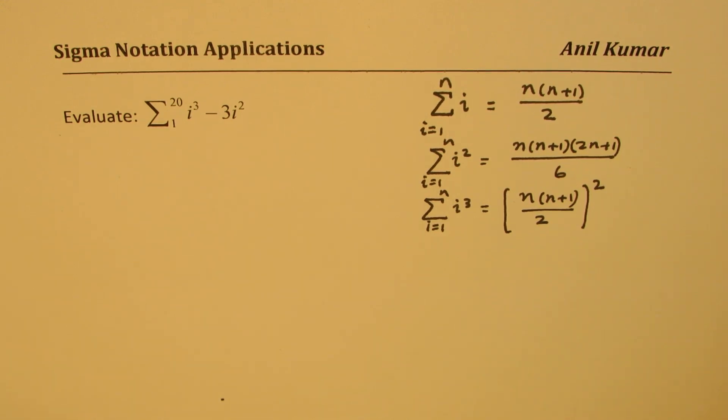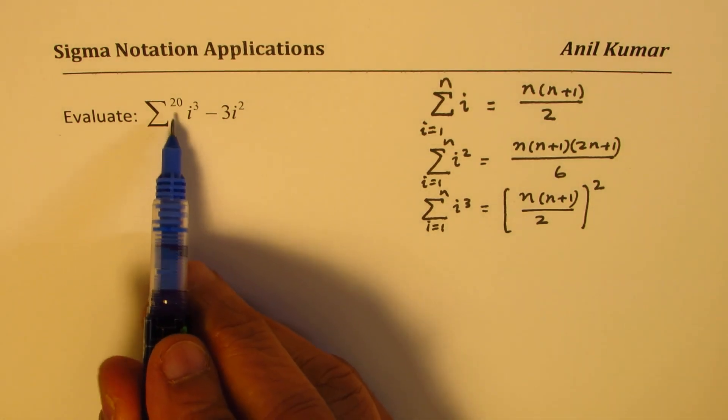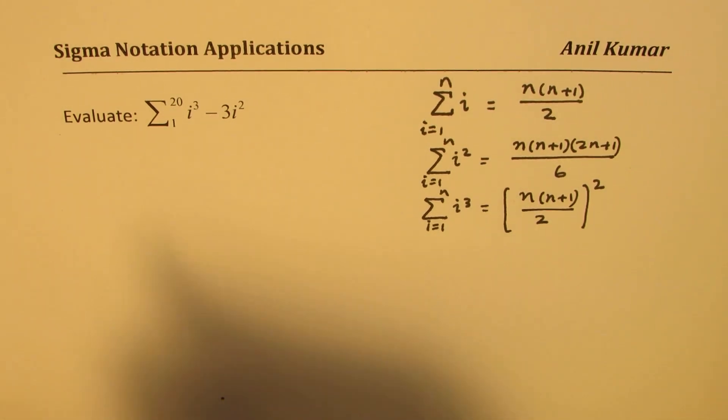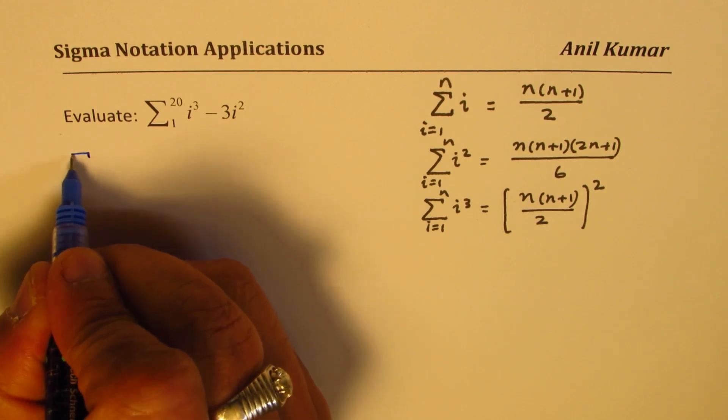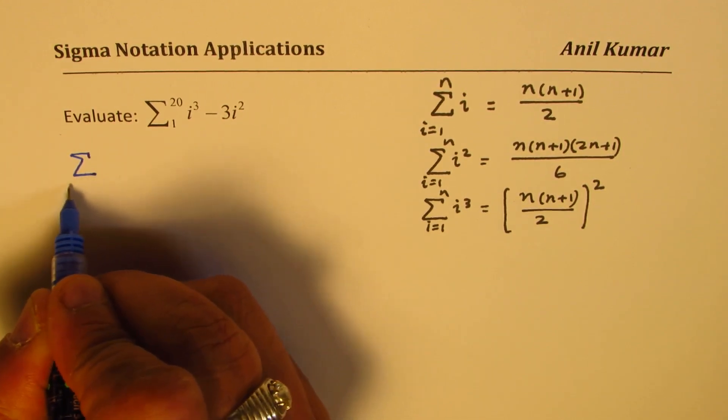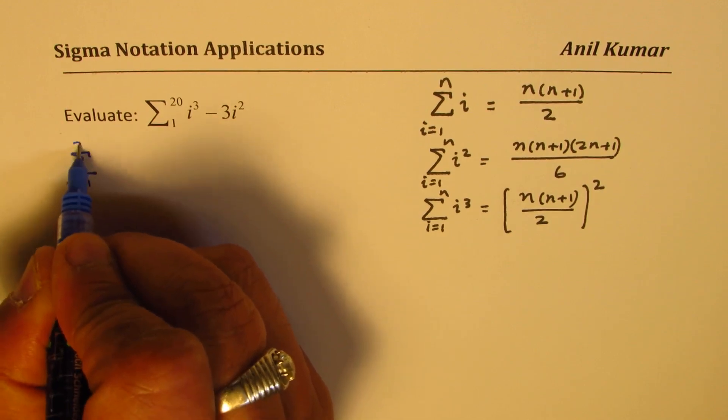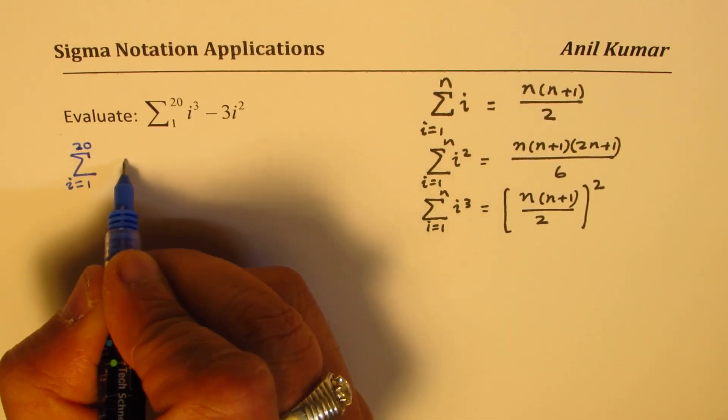Now, let us apply this formula. We basically have i to 20. So using, let me rewrite the question here. So we need to sum from i equals 1 to 20. This is another way of writing the same thing.